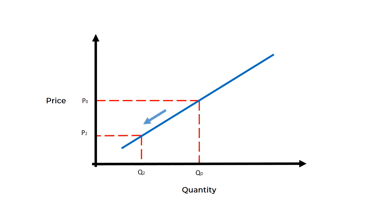If we shift left along the curve, we will see that prices fall from p0 to p2. This will cause suppliers to leave the market and the quantity will fall from q0 to q2.